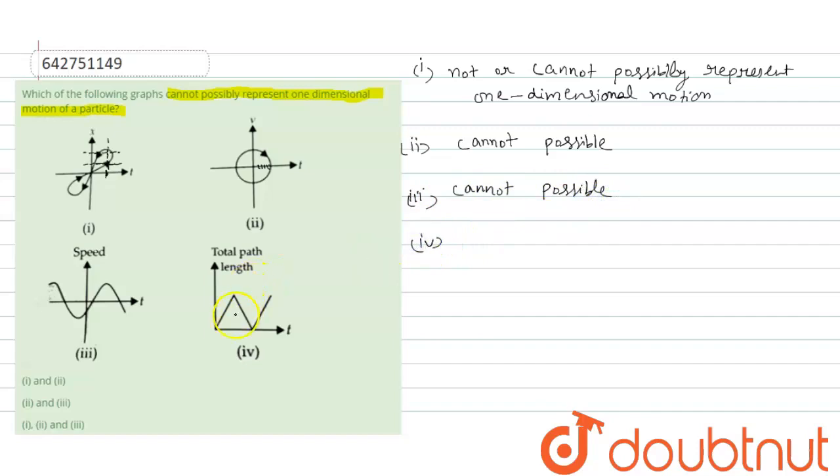Fourth, in this case, path length decreases with time. As time increases, first path length increases, then decreases, then increases. Path length can never decrease; it always increases because it is positive. So it also cannot represent, cannot possibly represent one-dimensional motion.